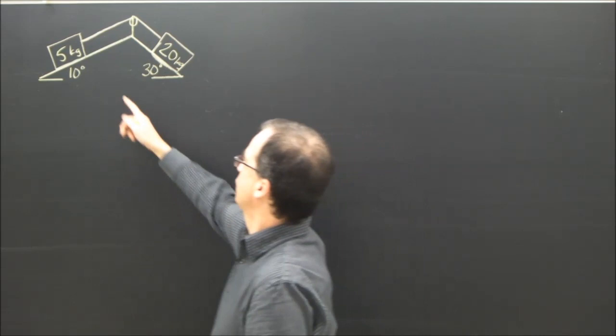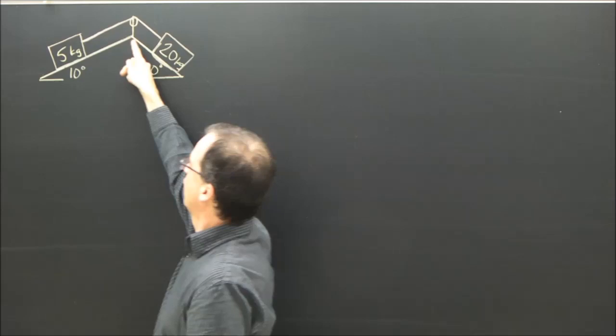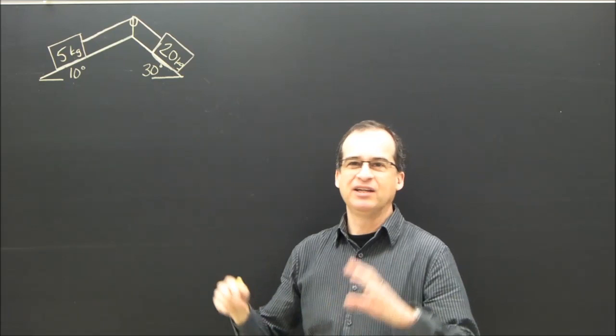Okay, we've got two masses, a 5 kg and a 20 kg on two ramps. So I've got a ramp here at 10 degrees with a 5 kg and a ramp here at 30 degrees with a 20 kg.